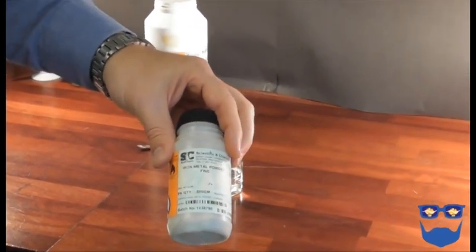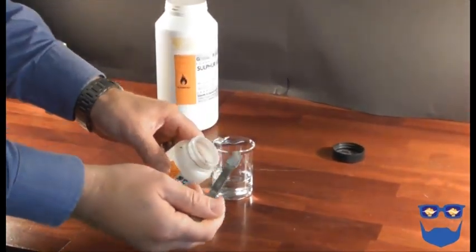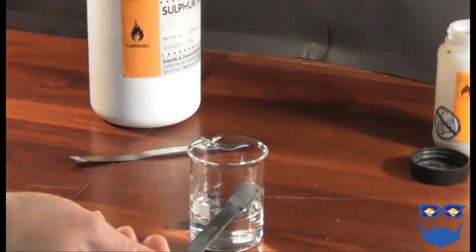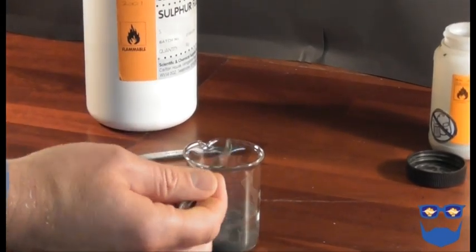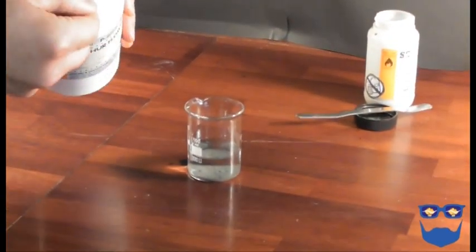Testing the physical properties. I'd ask the students to add one spatula, a small spatula of iron powder to a beaker of water and record their observations. Then add a similar amount of sulfur powder and record their observations once again.